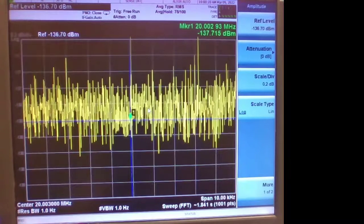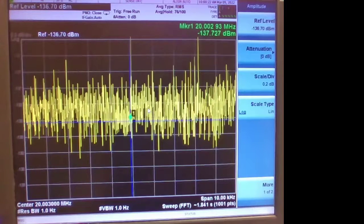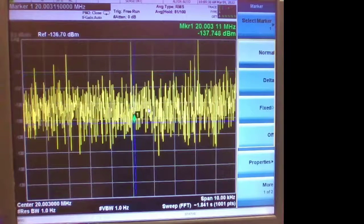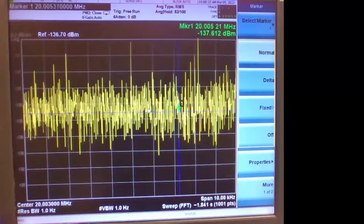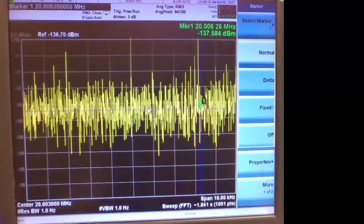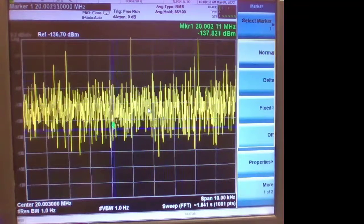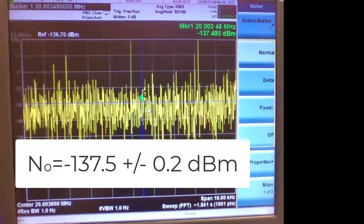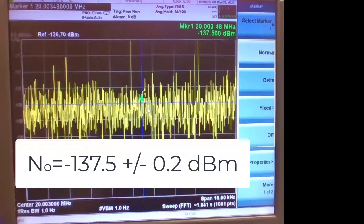So we've done about 75 averages. Let's do some analysis on this. Markers turned on so let's move it around and see. We have minus 137.5 plus or minus a couple tenths. I'm going to call the noise floor at minus 137.5 plus or minus 0.2 dBm.